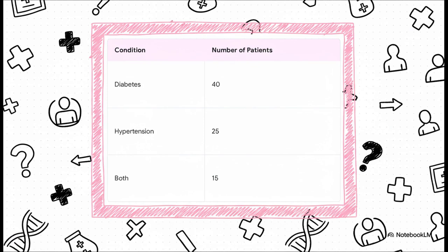We can see that 40 have diabetes, 25 have hypertension. But look at that last number. That's the one that makes you go, hmm, 15 patients have both. Now that overlap seems pretty big, right? But seems doesn't cut it. Let's prove it with math.